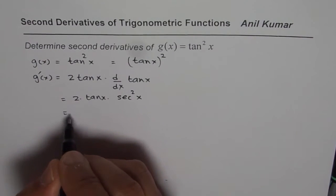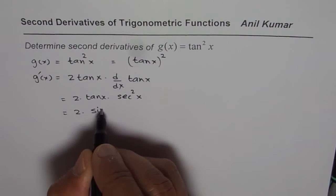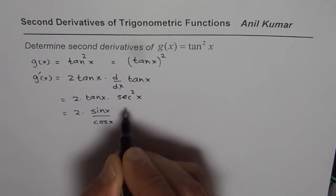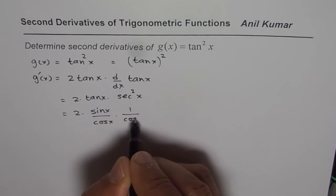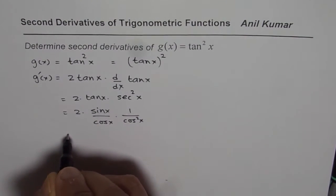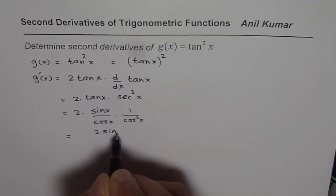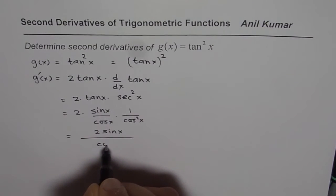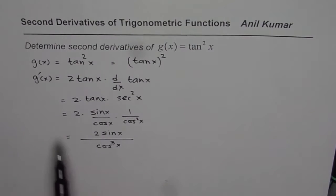At this point, let us try to simplify this. Tan x can be written as sin x over cos x, and secant square x is 1 over cos square x. So that gives us 2 sin x in the numerator and cos cube x in the denominator. So that becomes the derivative of the given function.